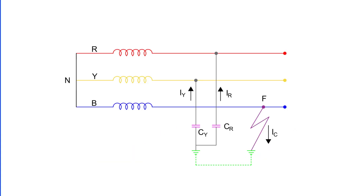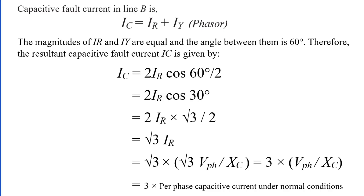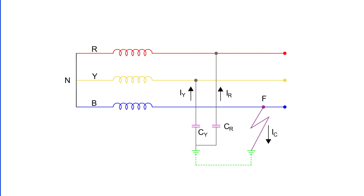Now let's look at the fault current in line B, called Ic. This is the phasor sum of Ir and Iy, so Ic = Ir + Iy. We know Ir = Vbr / Xc = √3 × Vph / Xc, and similarly Iy = Vby / Xc = √3 × Vph / Xc. So both Ir and Iy equal √3 × Vph / Xc. Hence Ic, the phasor sum of Ir and Iy, becomes 3 × Vph / Xc. That means Ic equals three times the per-phase capacitive current under normal conditions — the capacitive fault current in line B is three times the normal per-phase capacitive current.